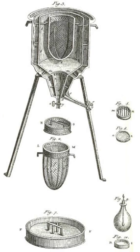Basically, a bomb calorimeter consists of a small cup to contain the sample, oxygen, a stainless steel bomb, water, a stirrer, a thermometer, the dewar or insulating container to prevent heat flow from the calorimeter to the surroundings, and an ignition circuit connected to the bomb. By using stainless steel for the bomb, the reaction will occur with no volume change observed.